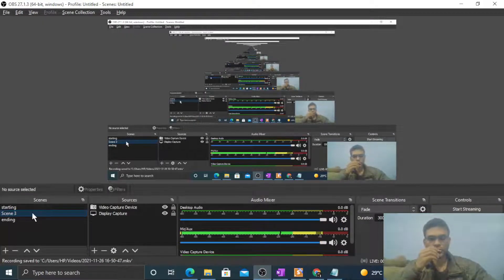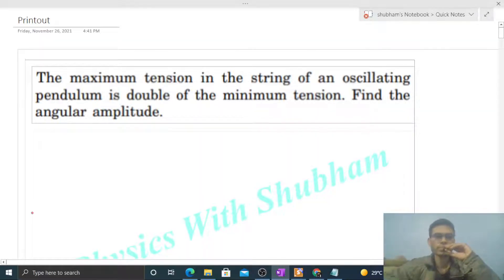Okay, hi everyone. Today let's discuss this interesting problem. It says the maximum tension in the string of an oscillating pendulum is double the minimum tension. Find the angular amplitude. So we have a simple pendulum that undergoes oscillatory motion, and we have to find out the amplitude of that SHM, let's say theta naught.